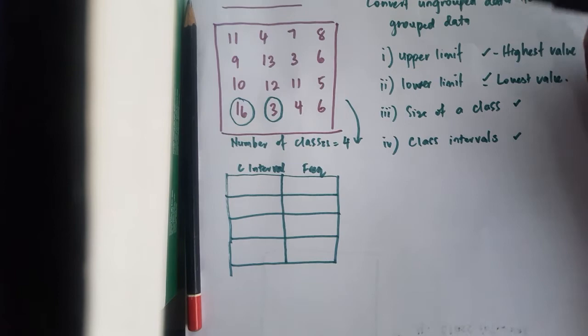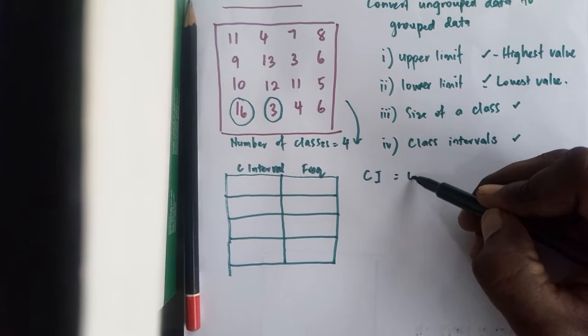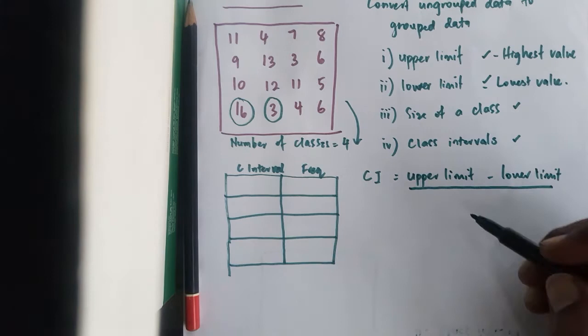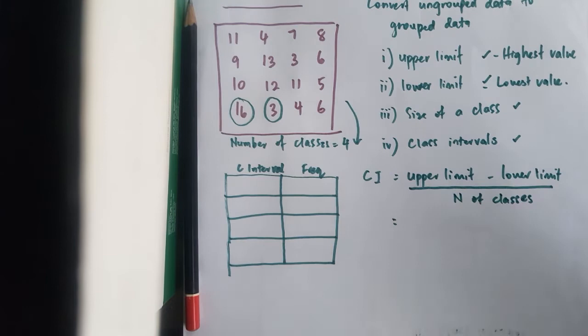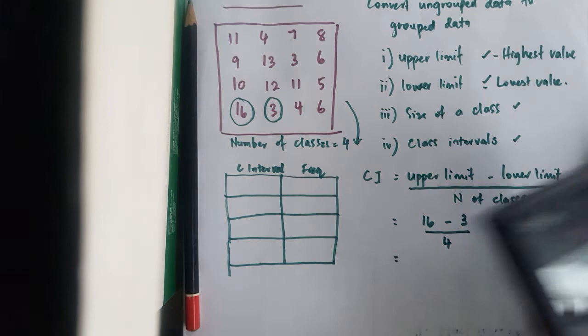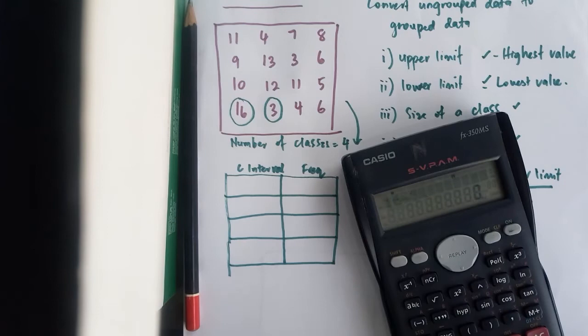So how do you calculate class interval? Now class interval is equivalent to upper limit minus lower limit, the whole thing divided by number of classes. So upper limit is 16 minus lower limit, 3 divided by 4.